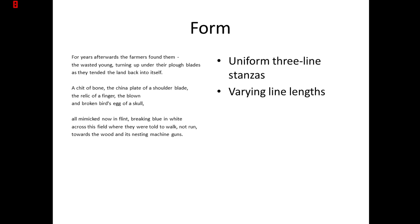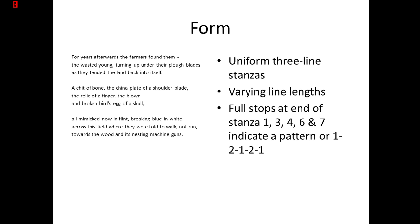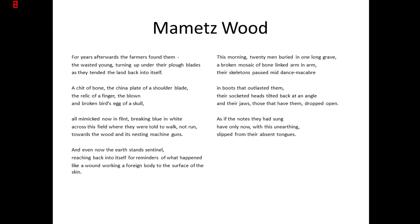If you have a look at the end of each stanza, you will notice that there is a pattern. There are full stops at the ends of stanzas one, three, four, six, and seven. So it's a seven-stanza poem, but not all stanzas have full stops at the end. So there's one stanza with a full stop, and then you have to wait until stanza three — so there are two stanzas together. You can see that the first stanza is on its own, and then we have two stanzas together, then one stanza on its own, two stanzas together, and then the final stanza on its own.